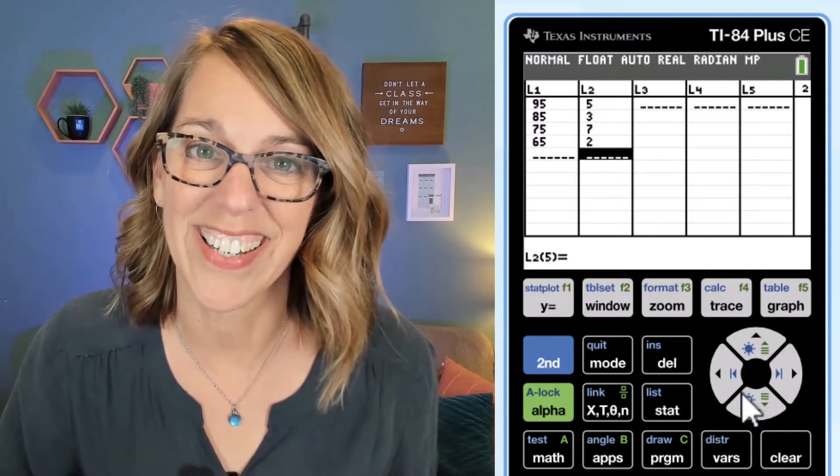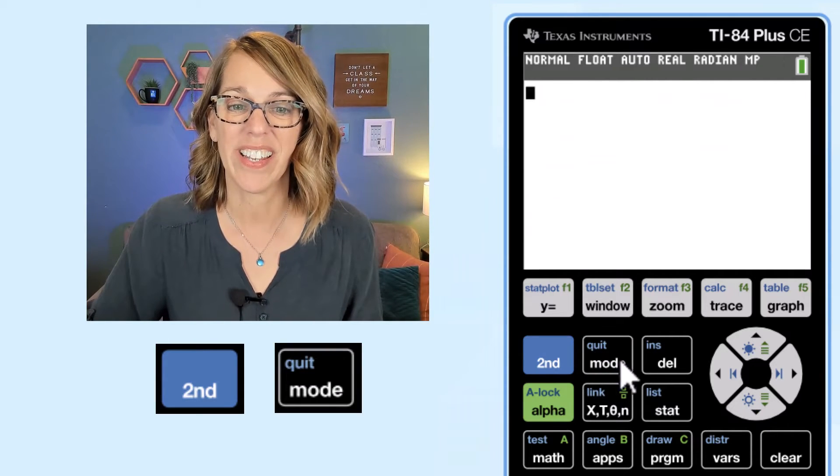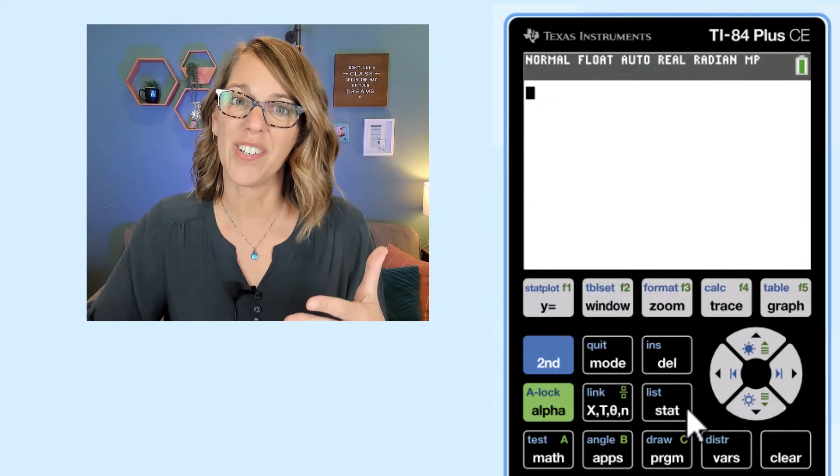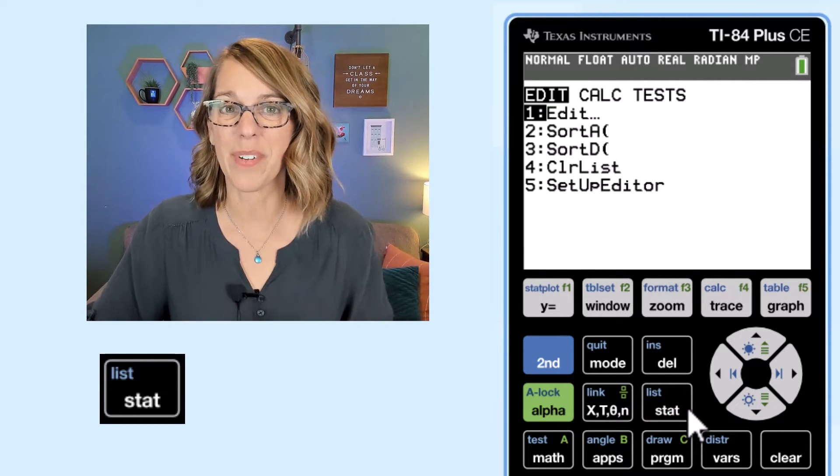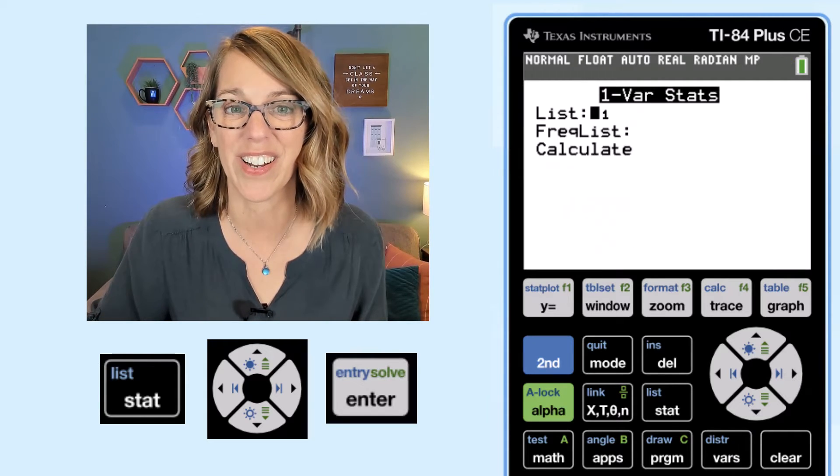Let's go compute those statistics. I'm going to leave here by doing second followed by quit. And then I'm going to go right back into the stat menu. And I want to go over to calc and then one variable stats. So I'm going to hit enter here.